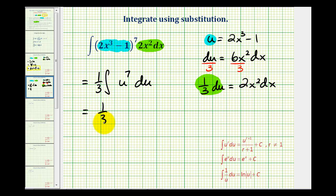So we'll have 1 third times the anti-derivative of u to the 7th. That'll be u to the 8th divided by 8 plus c.